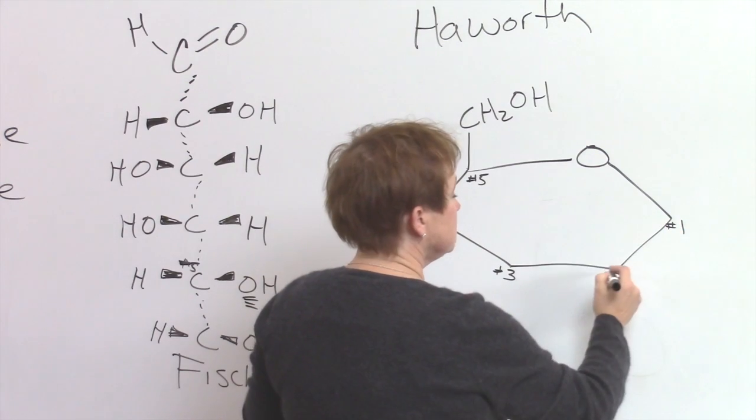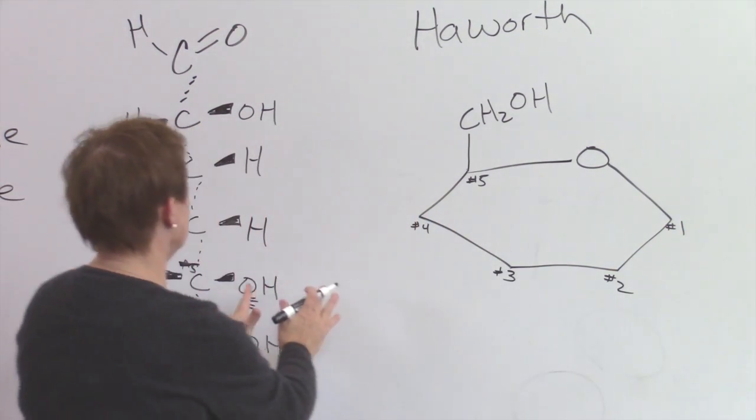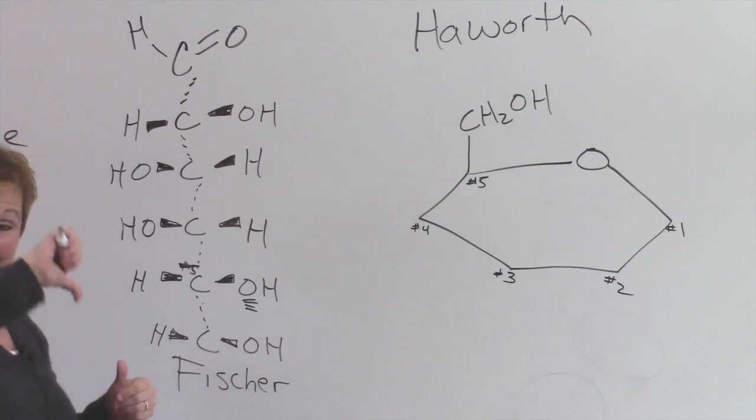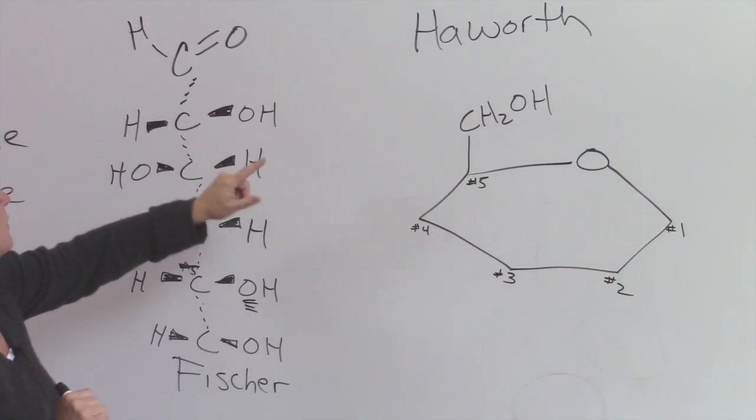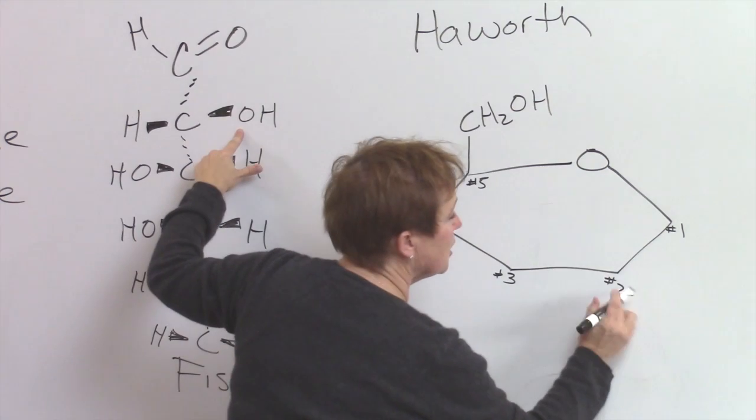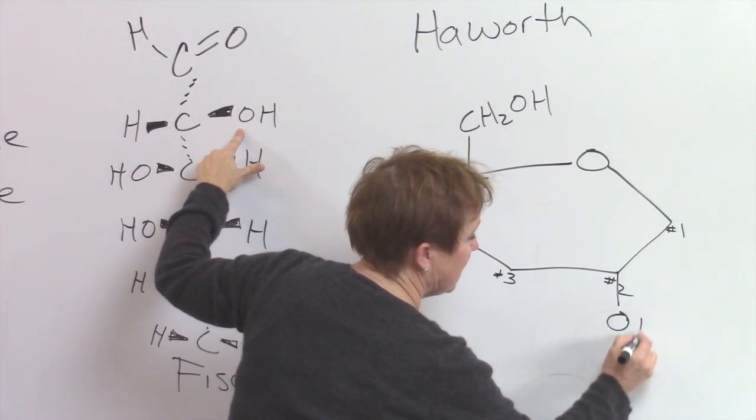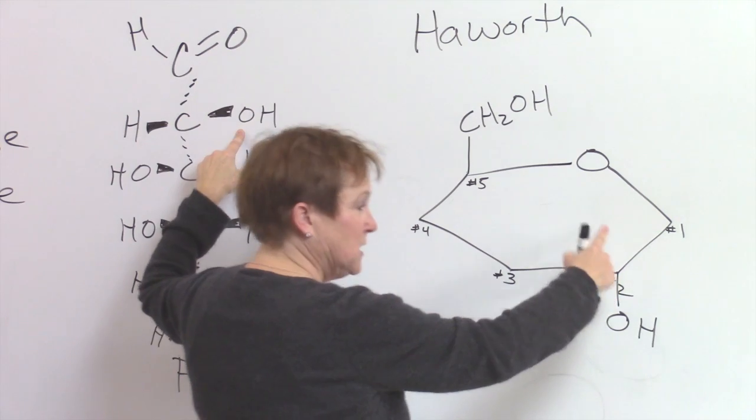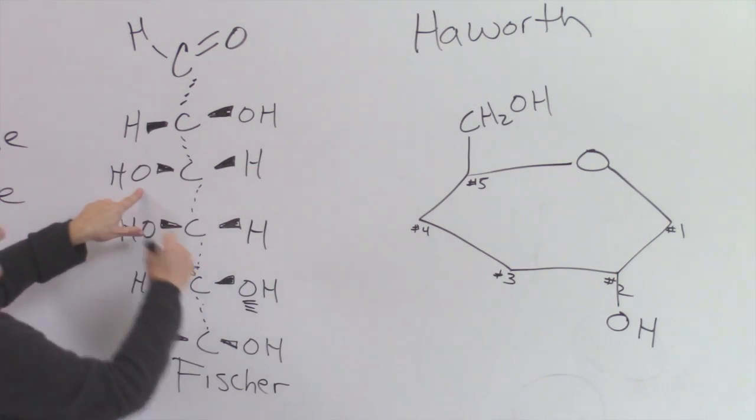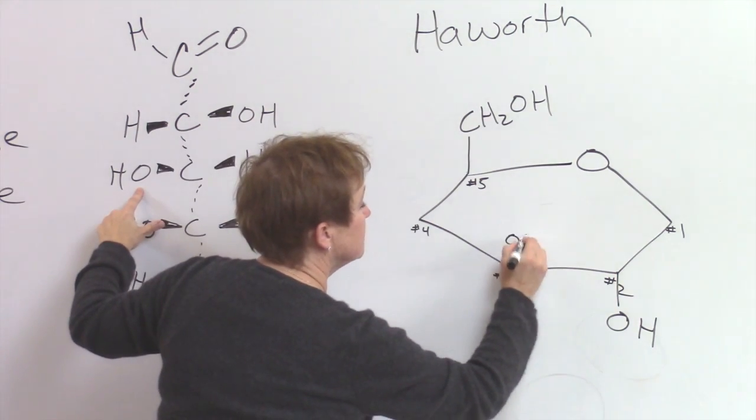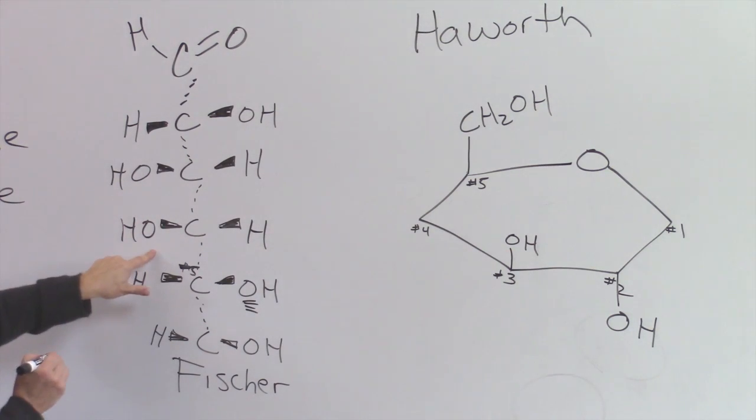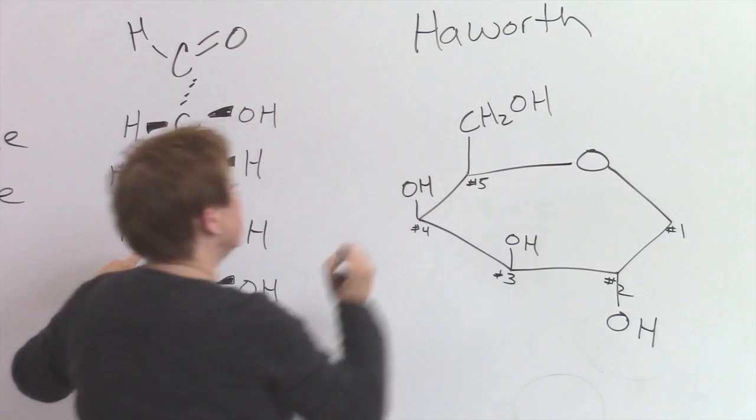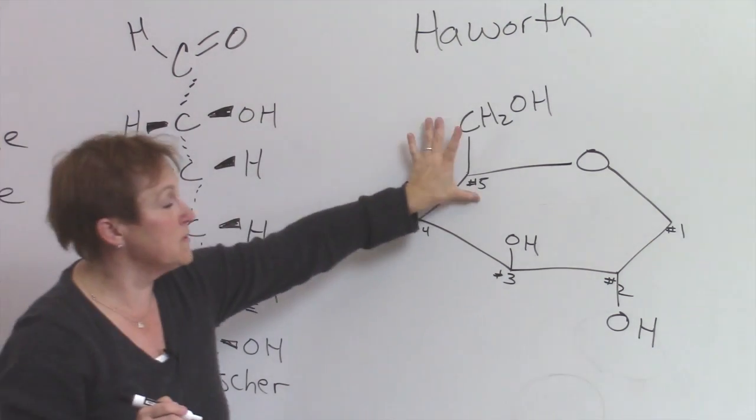Our general rule is if it's on the right-hand side of a Fisher's projection it's going to go down on the Haworth. Carbon number two, right-hand side, so this points down. We typically don't put in the hydrogens because it adds clutter. Left-hand side up. Number five we just typically draw it with this configuration.